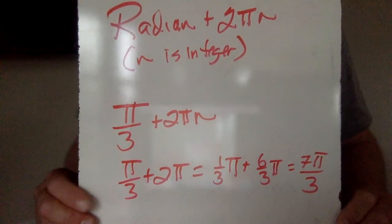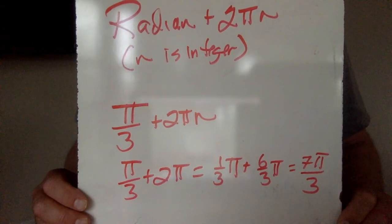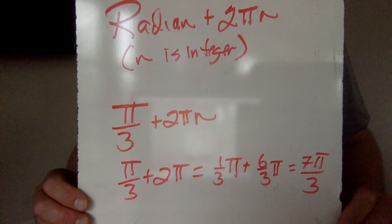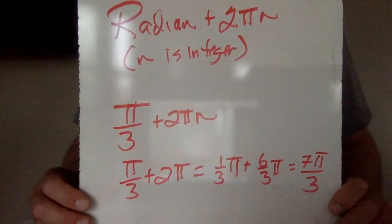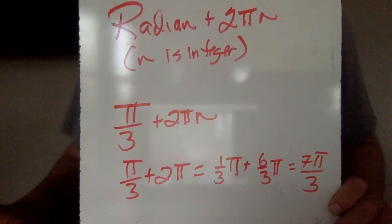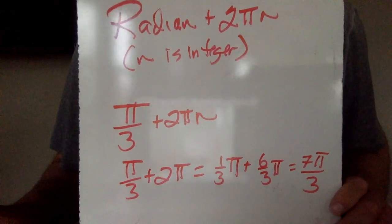When n is 1, we need common denominators. Make 2 pi into 6 thirds. And there's your 7 pi over 3. All right. No new material Thursday. We'll just go over stuff. Have a great day.